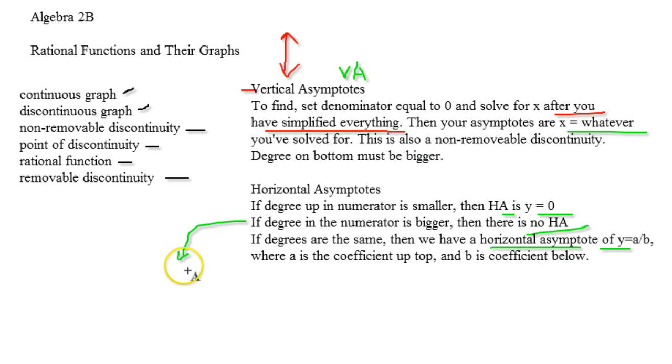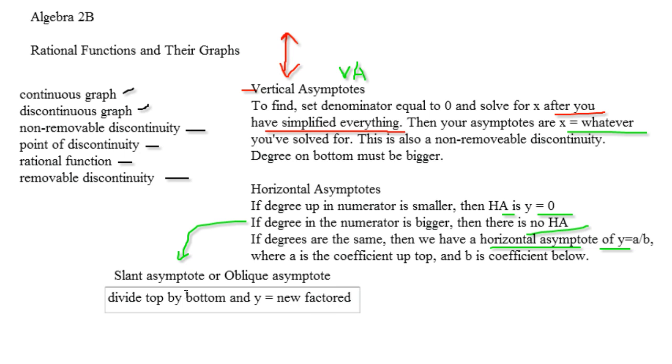All right, now I did want to talk about this. If the degree in the numerator is bigger, then there is no horizontal asymptote. What do we do then? We have this thing called, I like to call it a slant asymptote. But I do know that people sometimes call it oblique, and I believe some books call it that, or oblique asymptote. Okay. All right, and so to actually find the equation, okay, what you do is divide top by bottom and y equals the new factored form.